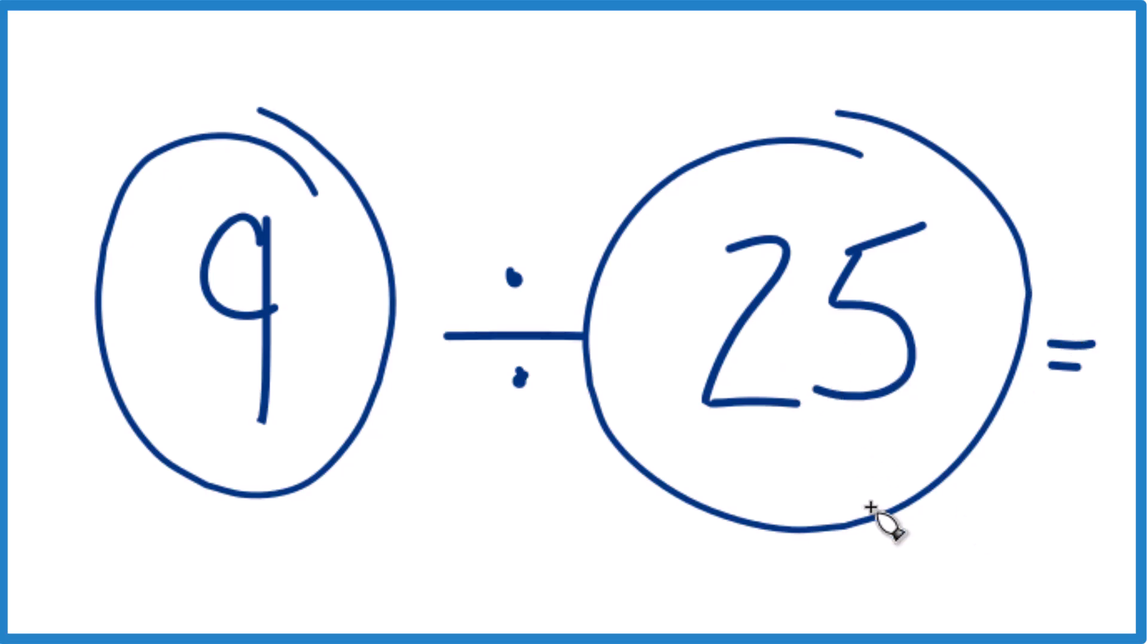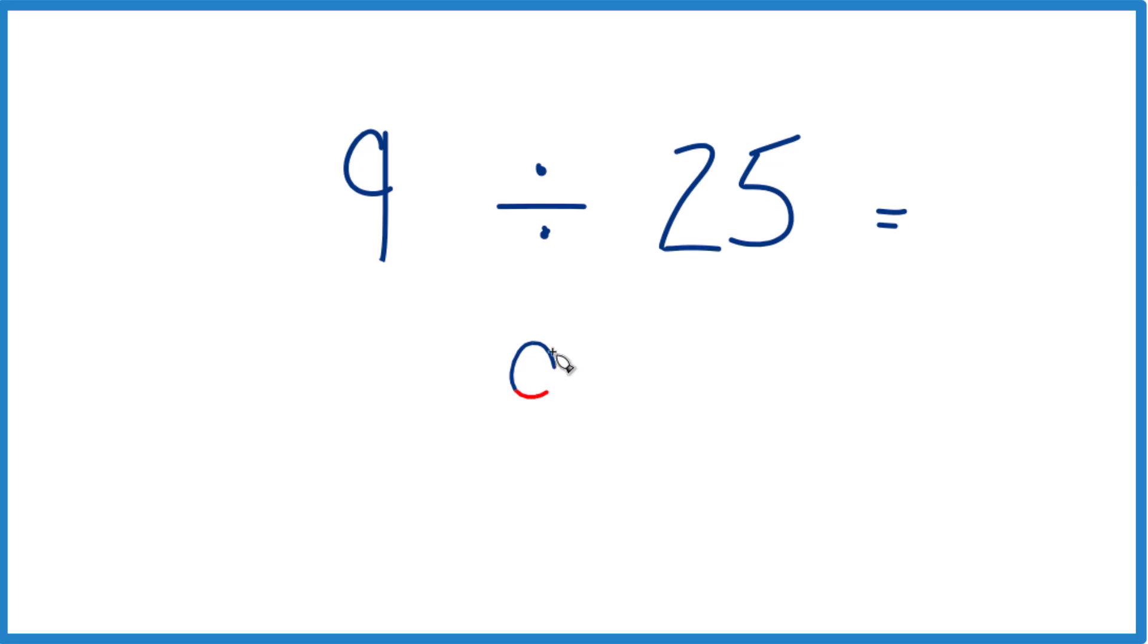Let me show you how I got there. So we could also call this 9 over 25 like that. It means the same thing, has the same value.